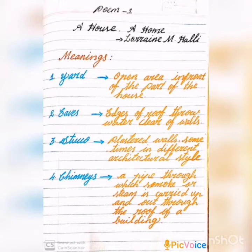Third one: Stucco. Stucco means plastered walls, sometimes in different architectural style. Fourth one: Chimneys. A chimney is a pipe through which smoke or steam is carried up and out through the roof of a building.